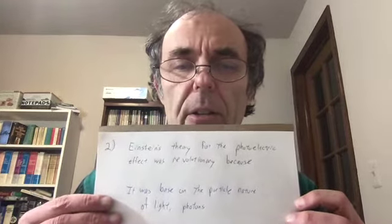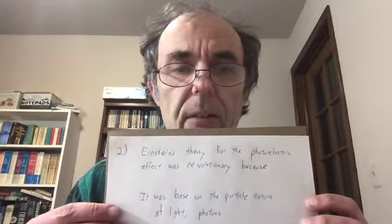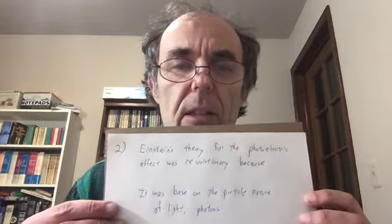Question two: Einstein's theory for the photoelectric effect was revolutionary because it was based on the particle nature of light — it really introduced the idea of photons. Planck had done a little bit along those lines, but Einstein introduced the idea that light has to be quantized. This is a history question where you have to know the significant main advances of those eight scientists. Einstein is one of them, so it was fair game.